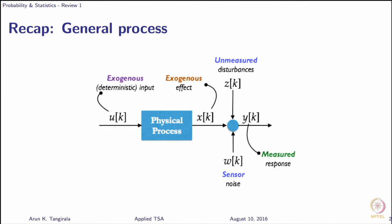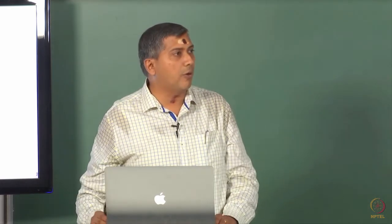This is a general process description where we have made the important assumption that the effects of unmeasured disturbances and the sensor noise add on to the response of the physical process. This is the assumption on which a lot of research has been done. Once we are saturated with this additive assumption and manage to explain a class of processes, we then encounter processes where the additive assumption does not work, and we turn to a multiplicative assumption. We will focus on the additive assumption.